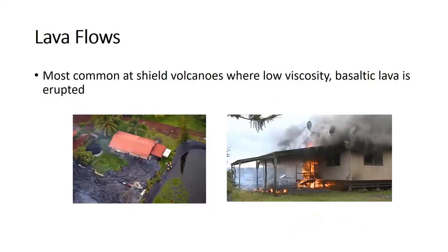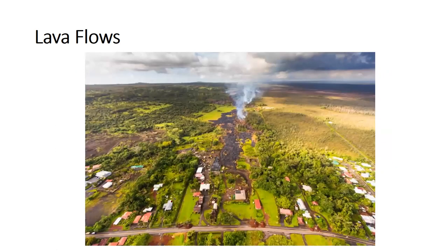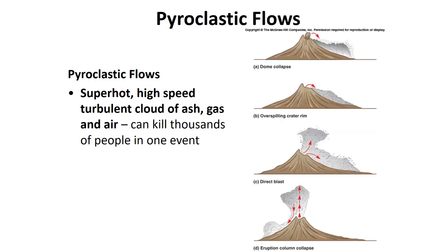Lava flows — as we said in the last lecture, this hazard is most common in shield volcanoes that erupt basaltic lava that has a low viscosity and therefore can flow far distances before cooling. It's not a significant threat to life, but it is to property, because we can't move roads, bridges, and houses out of the way in time. Here is an image of a lava flow flowing into a village. One form of mitigation is digging ditches to divert the lava around structures, or building barriers like levees to guide the lava flow in another direction.